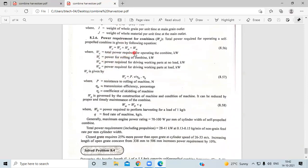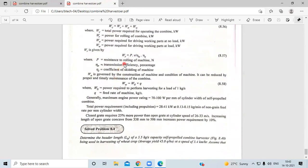For power requirement, WC equals WR plus WW. WC is the total power required for operating the combine in kilowatts. WR is the power required for rolling the combine. WW is the power required for driving working parts, and WW0 is power required for driving working parts at no load. WR equals P times V into EtaTR times EtaS. These are the particulars. WW equals W0 times Q, here are the particulars.